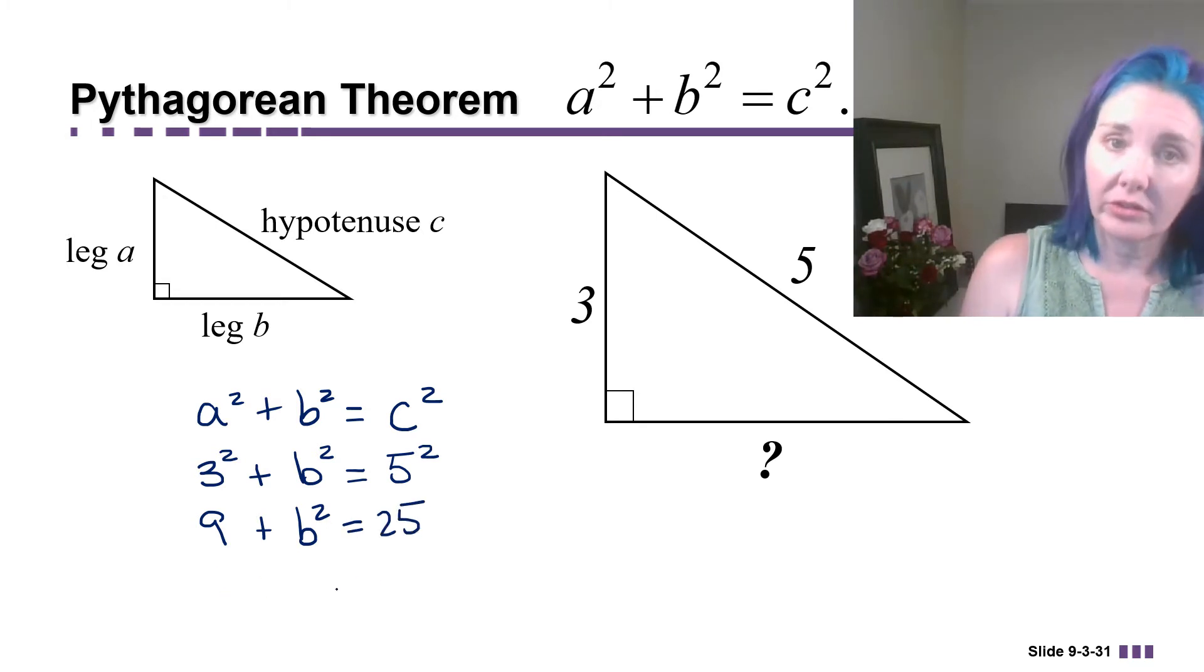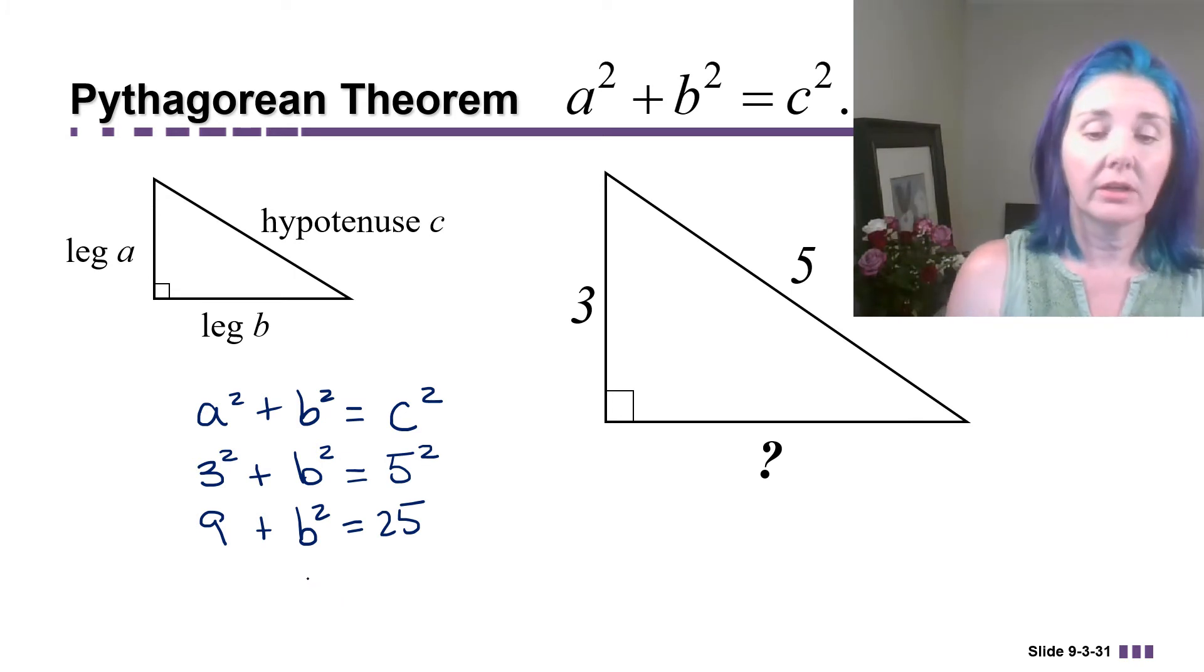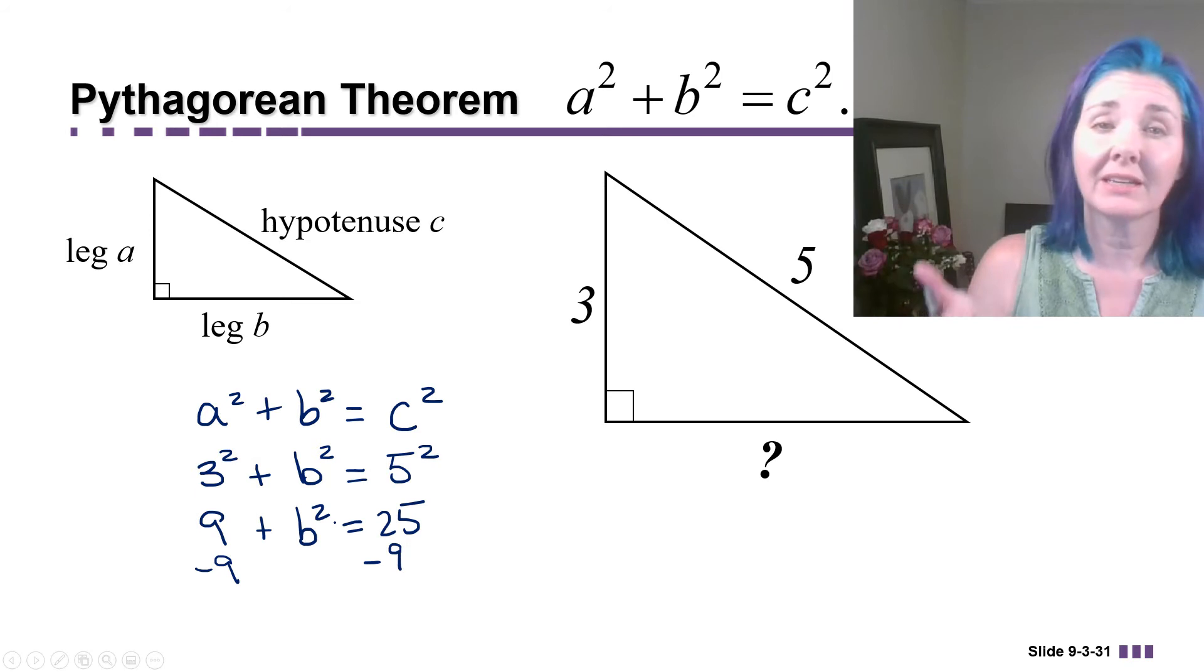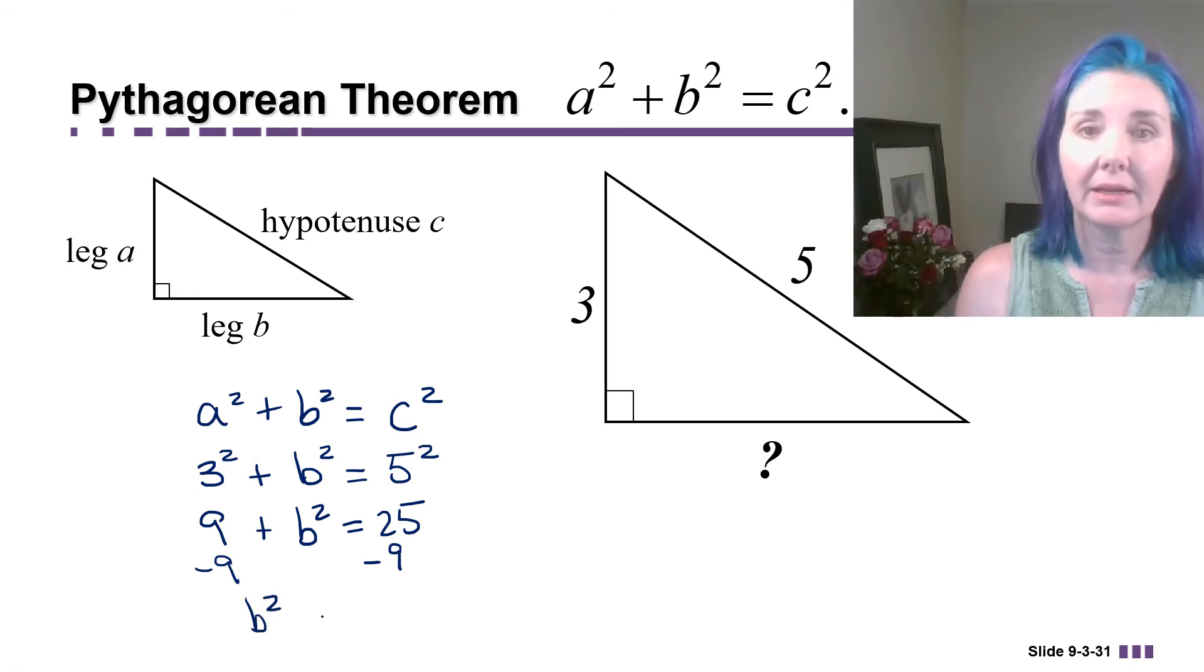Now we have solved equations where we have a variable squared equal to a number using the square root property, but you have to have that variable squared by itself. So I need to get b squared by itself, which I can do by subtracting 9 from both sides of the equal sign to keep things balanced. So now I'm going to get b squared by itself equals 16.